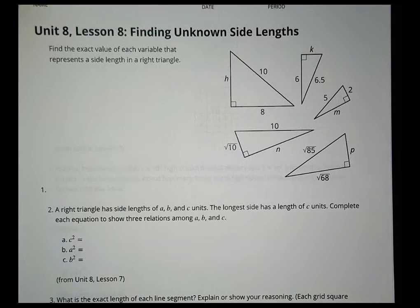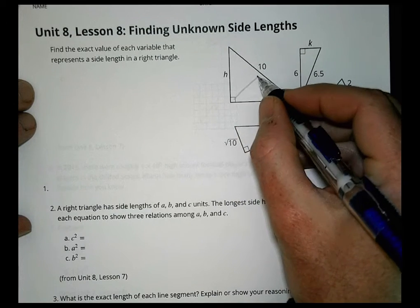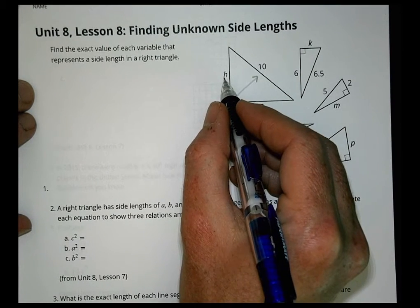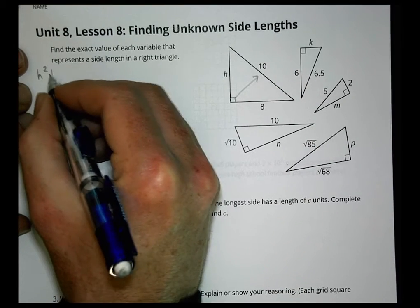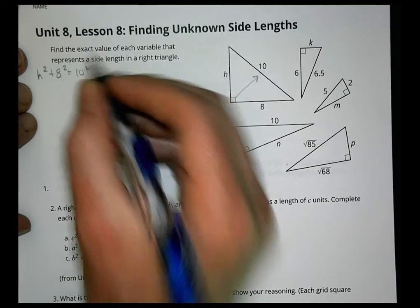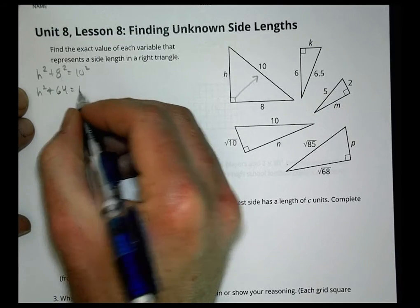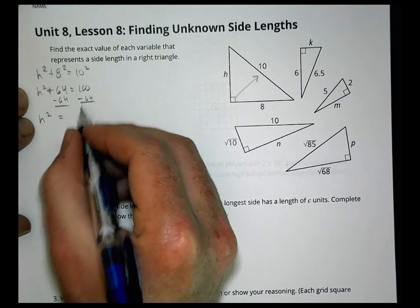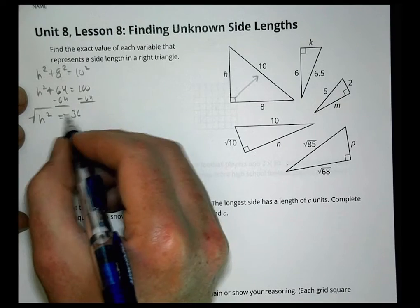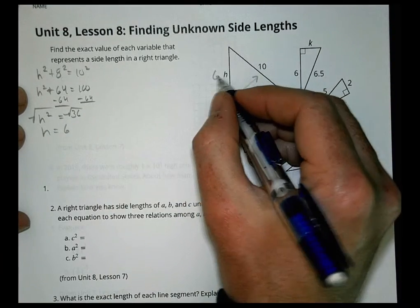Homework time for Math 8, Unit 8, Lesson 8. Five problems to solve. First, identify the hypotenuse. For problem 1: h² plus 8² equals 10², so h² plus 64 equals 100. Subtract 64 from both sides: h² equals 36. Take the square root of both sides: h equals 6.